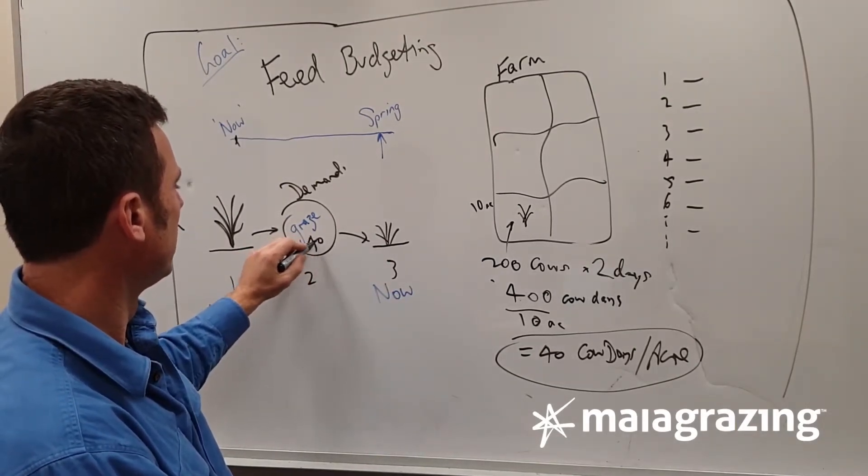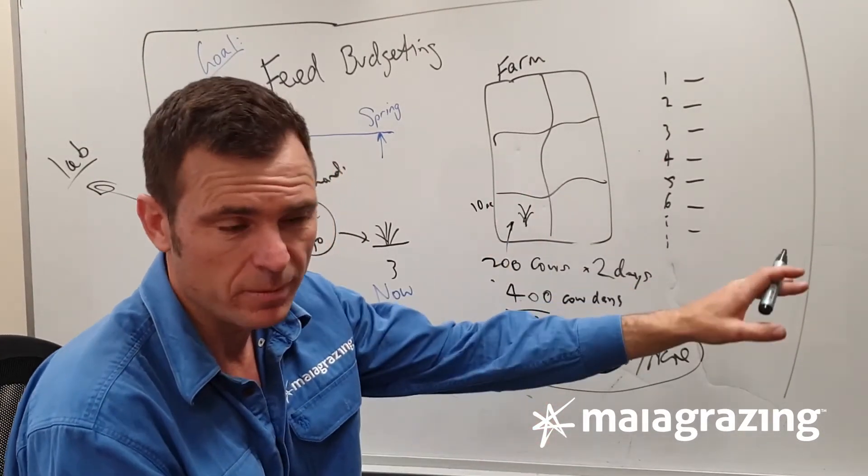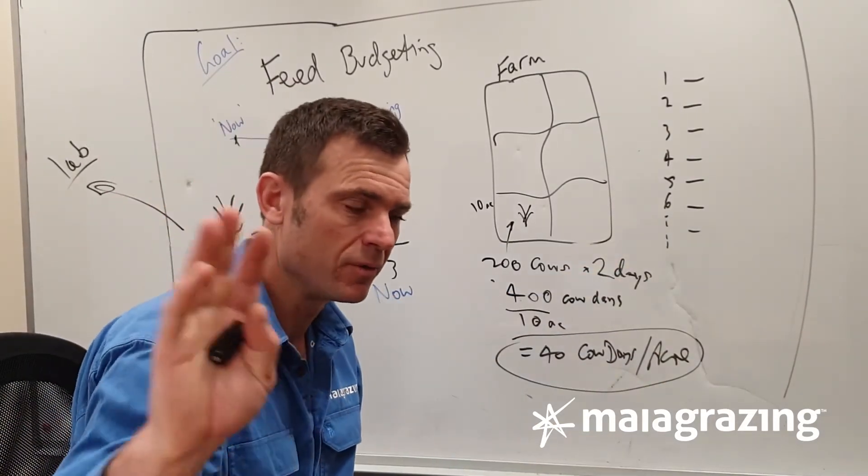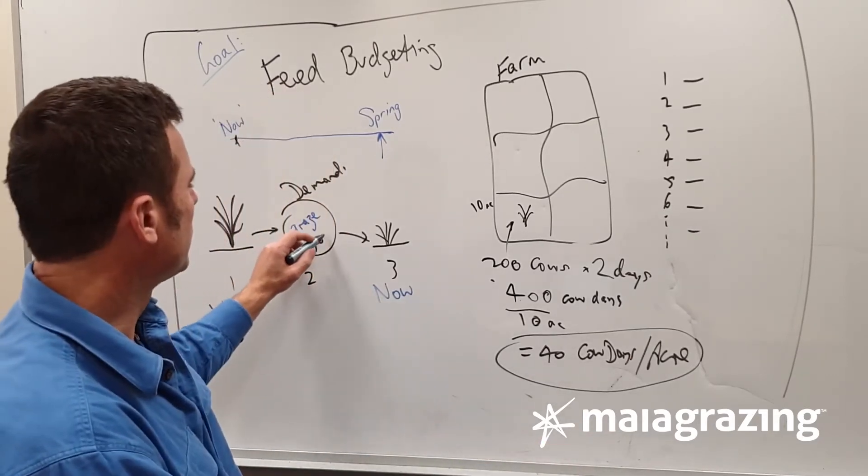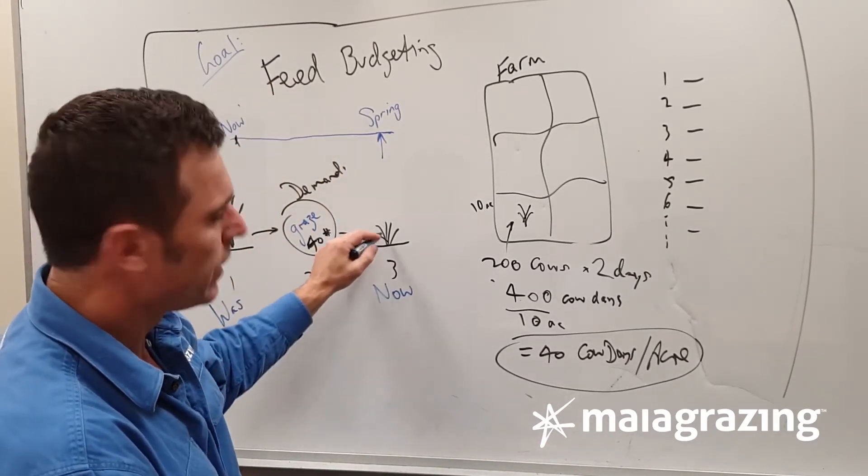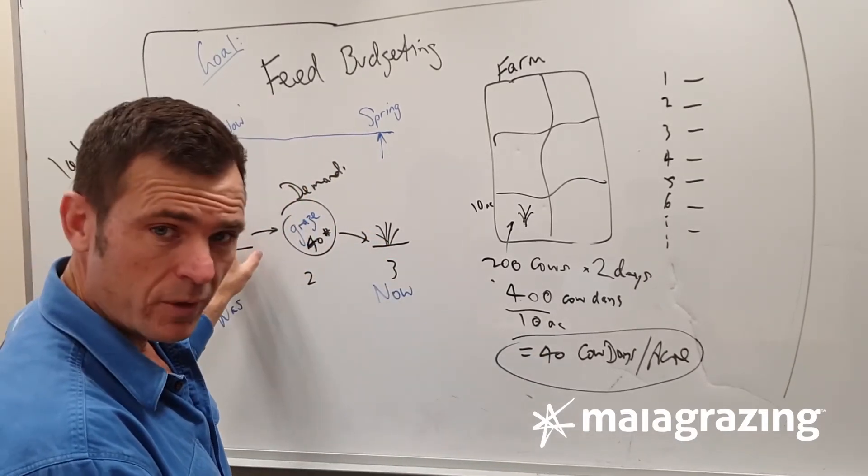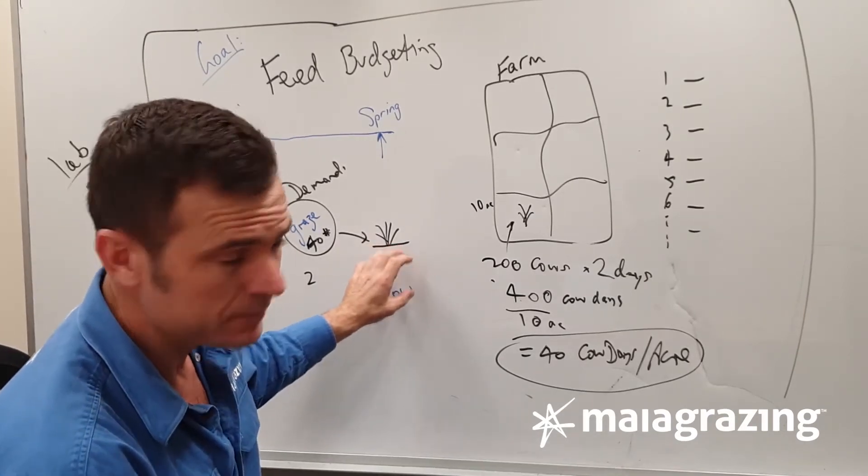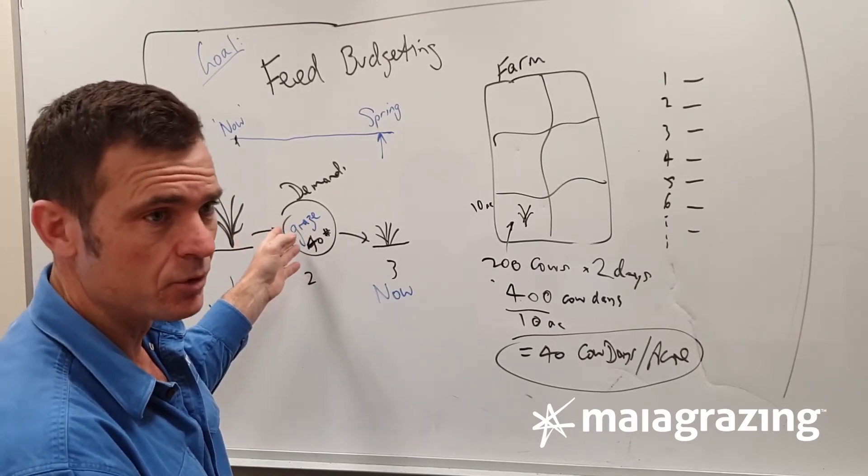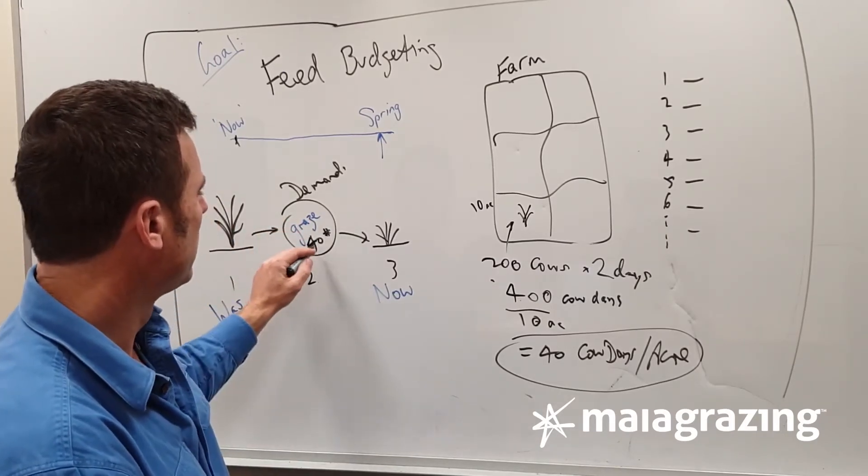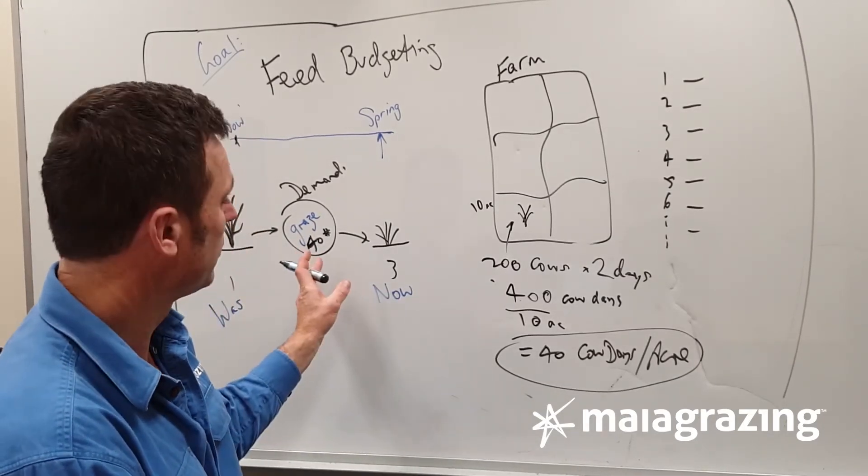We've harvested 40 cow days worth of feed, which might be a certain amount of pounds, it might be a certain number of kilos, it might be a certain other unit in another country, but we're not focused on that. We took out 40 units. So if we then look at that, there's three parts to this equation: looking at the field before we grazed it, looking at the field after we grazed it, and then working out how much did we actually harvest, how much was consumed, how much went down the cow's throat.